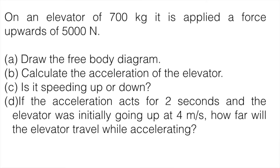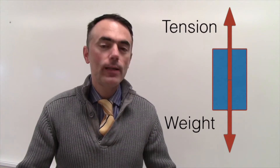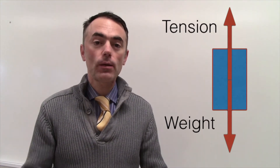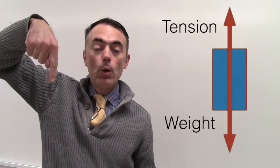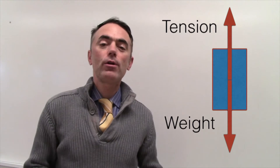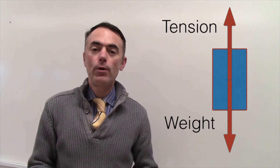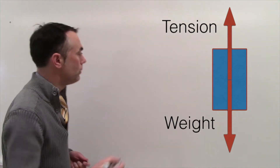Let's do this example. Assume that an elevator of 700 kilograms has a force of 5,000 newtons applied upwards. We have a mass of 700 kilograms, so there will be a weight pointing downwards, and a 5,000 newton force pointing upwards. The free body diagram will look something like this.